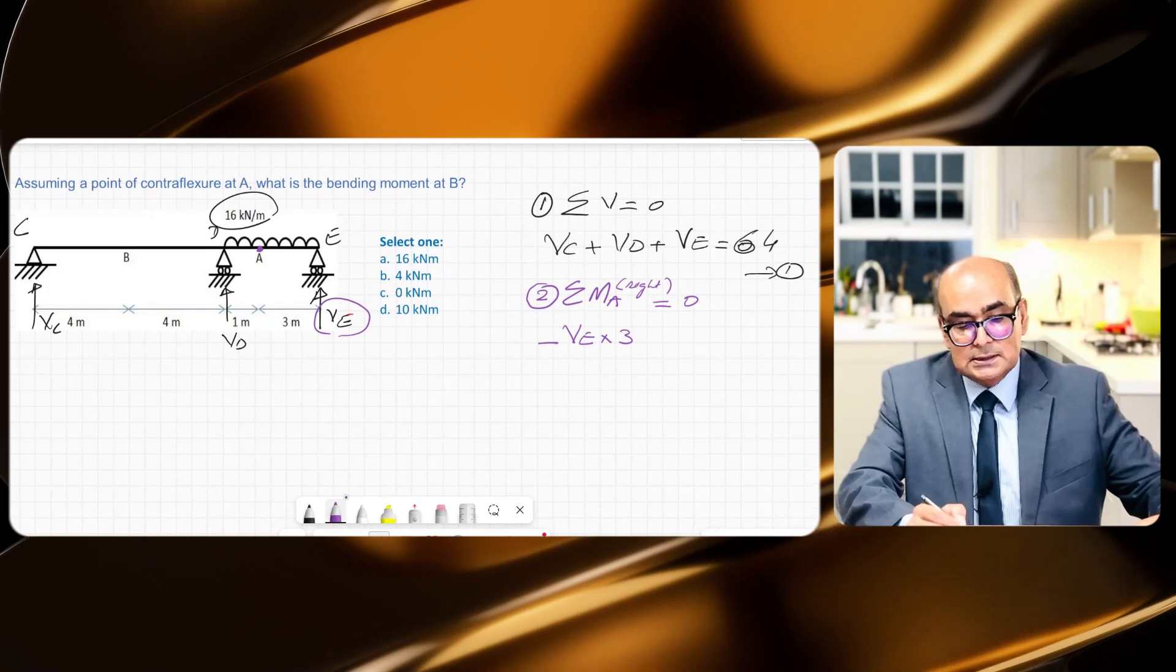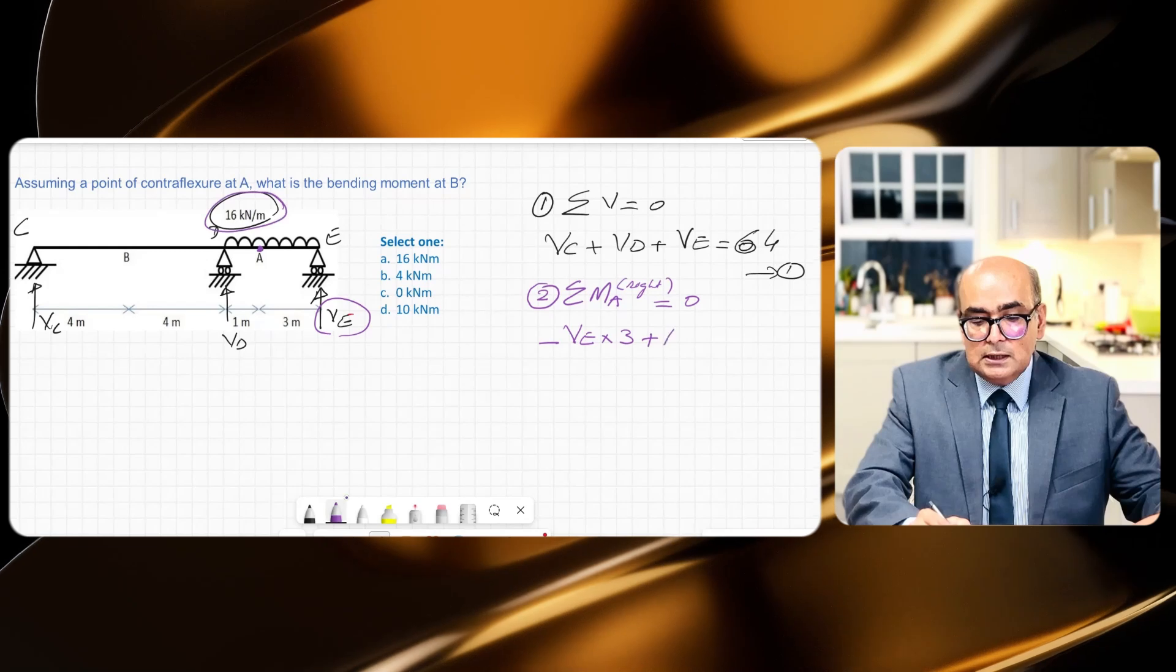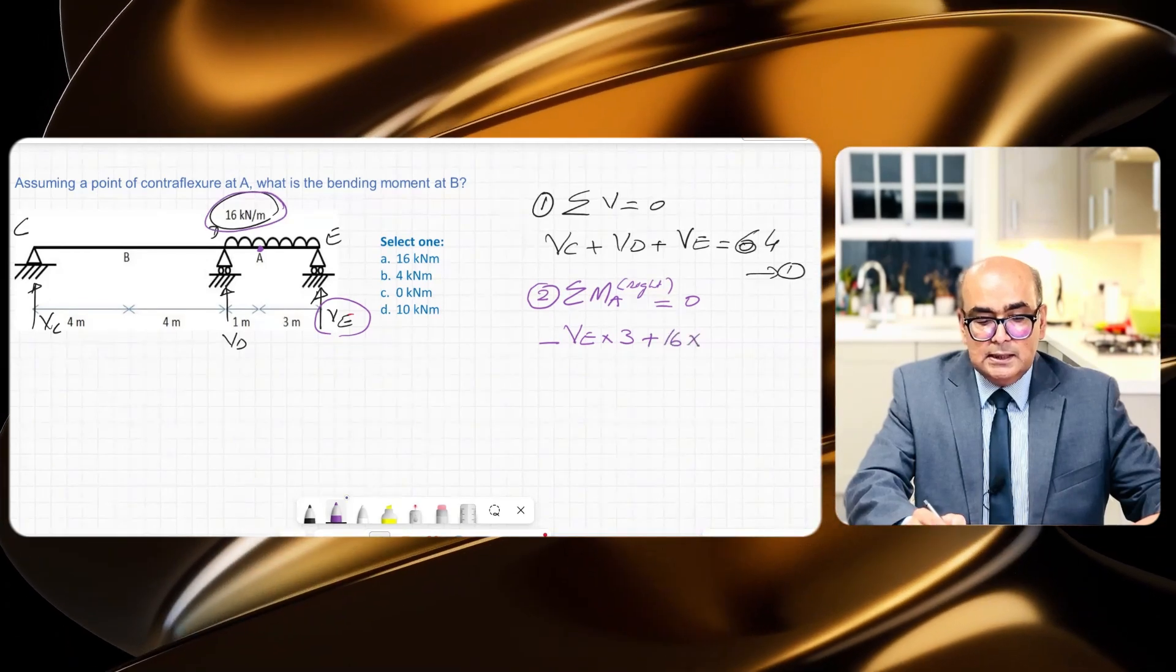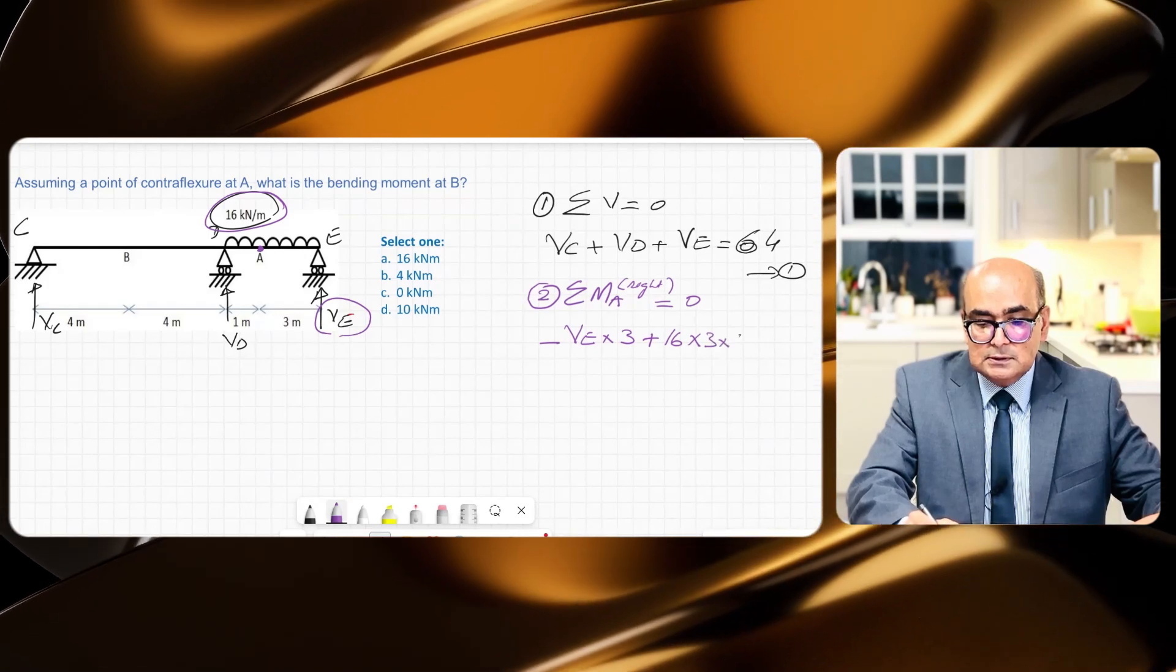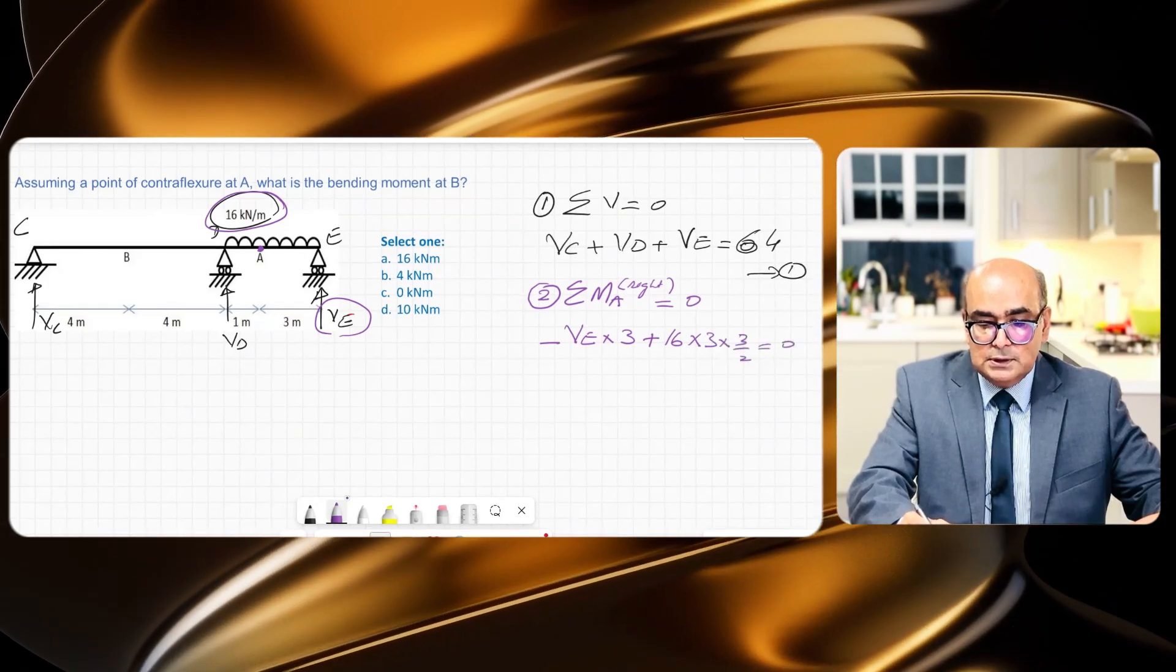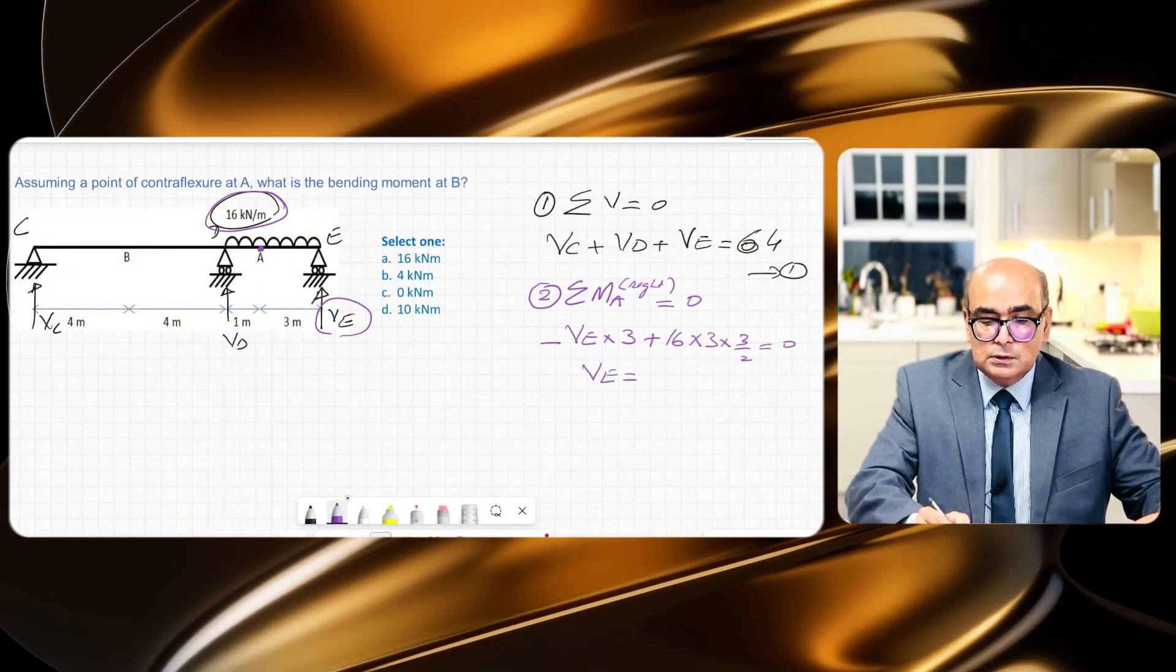So VE times distance from A to E is 3 meters, and this is creating anti-clockwise moment so that's why it is negative. Plus due to this 16 kN, 16 times from A to E I have 3 meters times 3 divided by 2 is equal to zero.